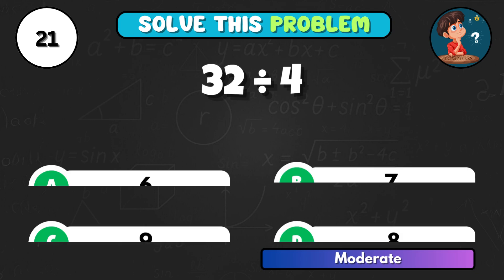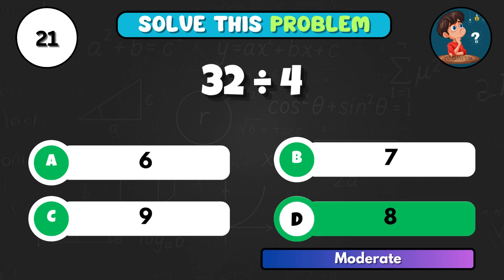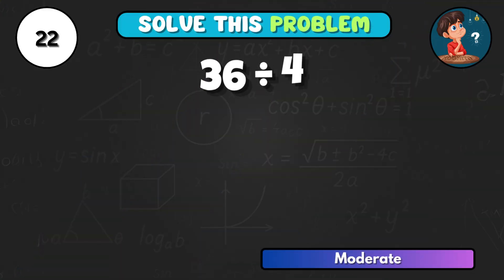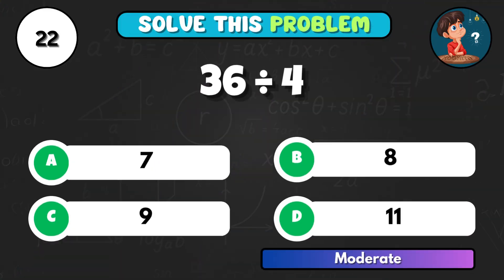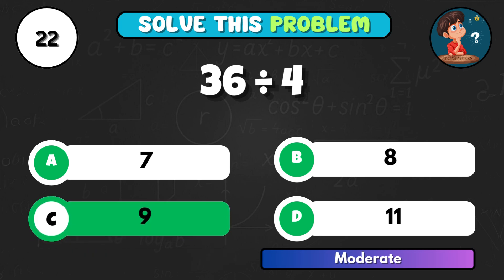Let's go a bit higher, divide 32 by 4. The answer is D equals 8. 36 divided by 4, what do you get? Option C equals 9.